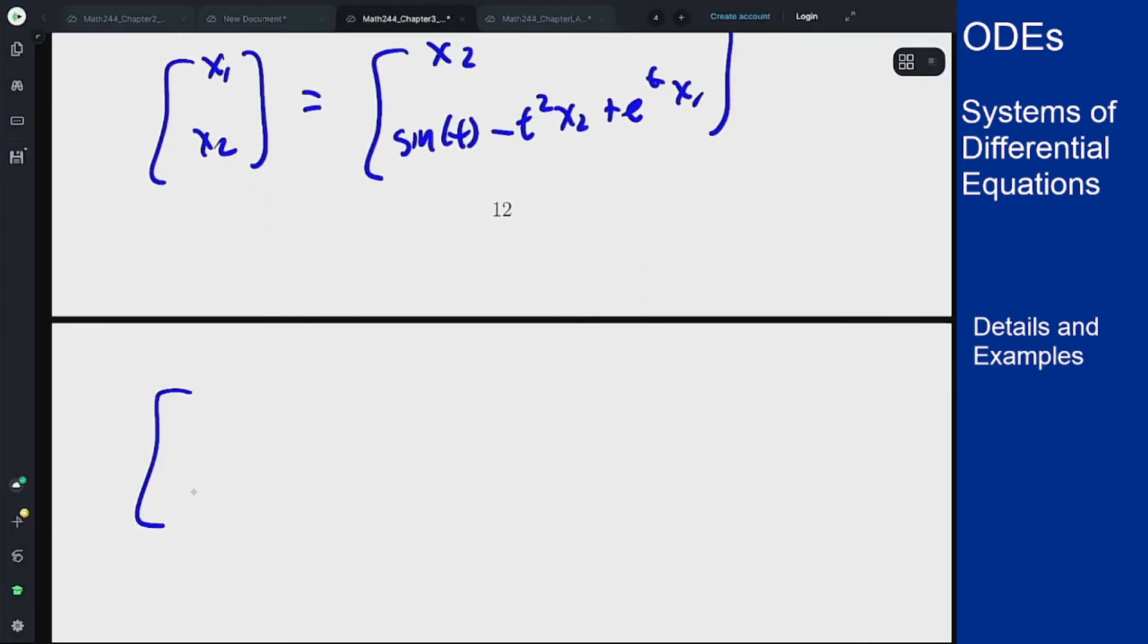So in that case, I would get something like x1, x2 prime equals 0 and sine of t, for the terms that don't have x's in them, plus a 1 and a minus t squared times x2, plus a 0 e to the t times x1.